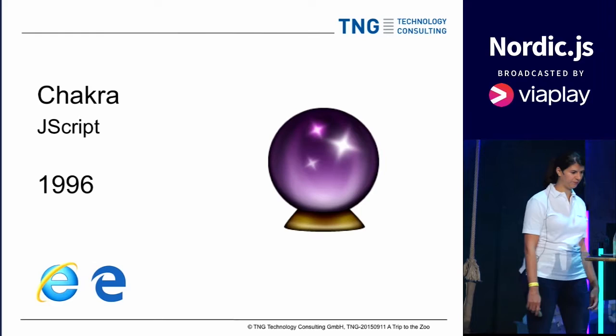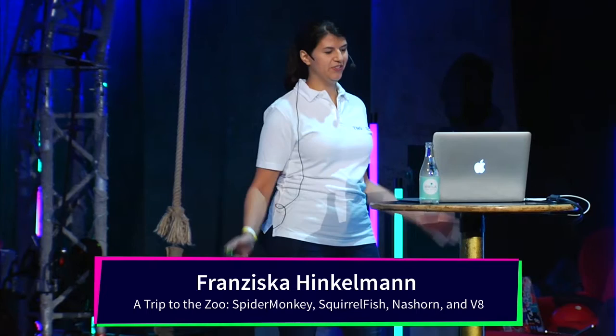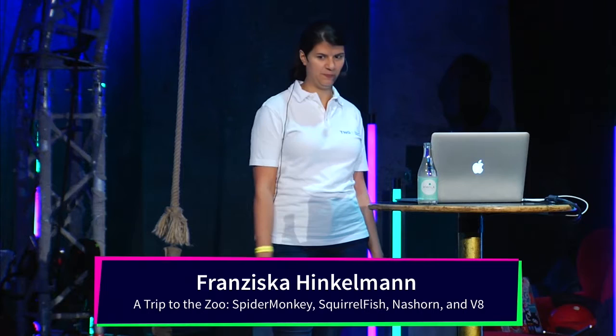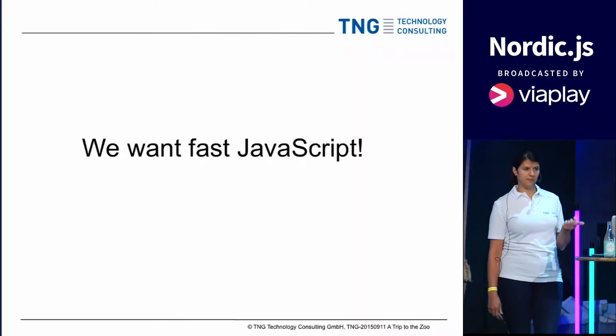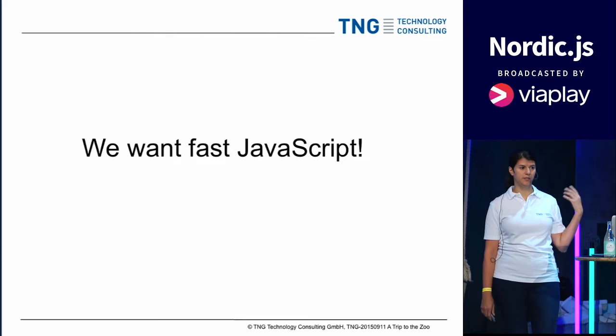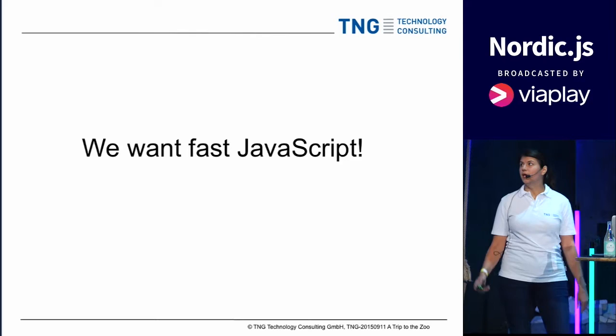So that's already the end of our trip to the zoo. The animals were just a trick to lure you in here. Now that I have you here, let's move on to something more serious and look at the technical details. Those engines have been rewritten several times, and that's because we wanted better performance — we want fast JavaScript. Over the last 20 years, a lot of effort has been put into making the engines faster.